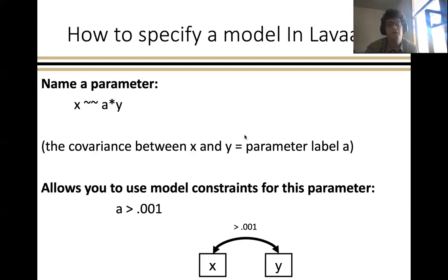So this names the covariance between x and y to be a, and that's useful because then you can, in the later part of your model, use what is referred to as model constraints for a particular parameter. So let's say that for some reason you know that x and y's covariance should be above zero, but you don't know exactly what that number should be. So you're not fixing the value to anything in particular, but you are telling Lavaan that that value should be above this particular number of 0.001.